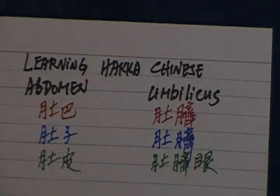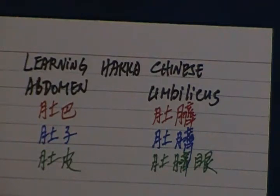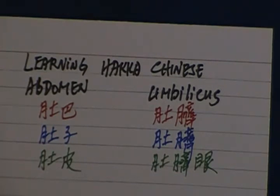Abdomen. Abdomen in Hakka Chinese is Tupa. In Mandarin is Tuzi. And in Shanghainese dialect is Dubi. Tupa in Hakka Chinese, Tuzi in Mandarin, Tupi in Shanghainese dialect.